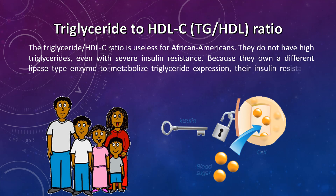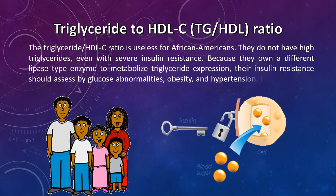For African Americans, insulin resistance should be assessed by glucose abnormalities, obesity, and hypertension — not by high triglycerides and/or low HDL cholesterol.